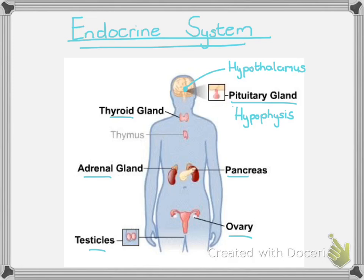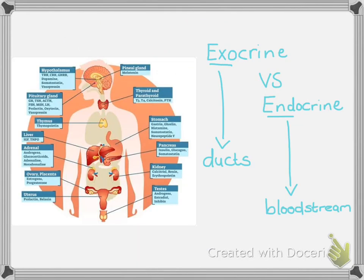What's great about this topic is we are coming into it with a lot of prior knowledge from previous topics we've already completed. There are a large number of hormones in the human body, and we're going to focus on some of the most important ones relevant to today. But before we do that, we need to quickly clarify the difference between an exocrine gland and an endocrine gland.